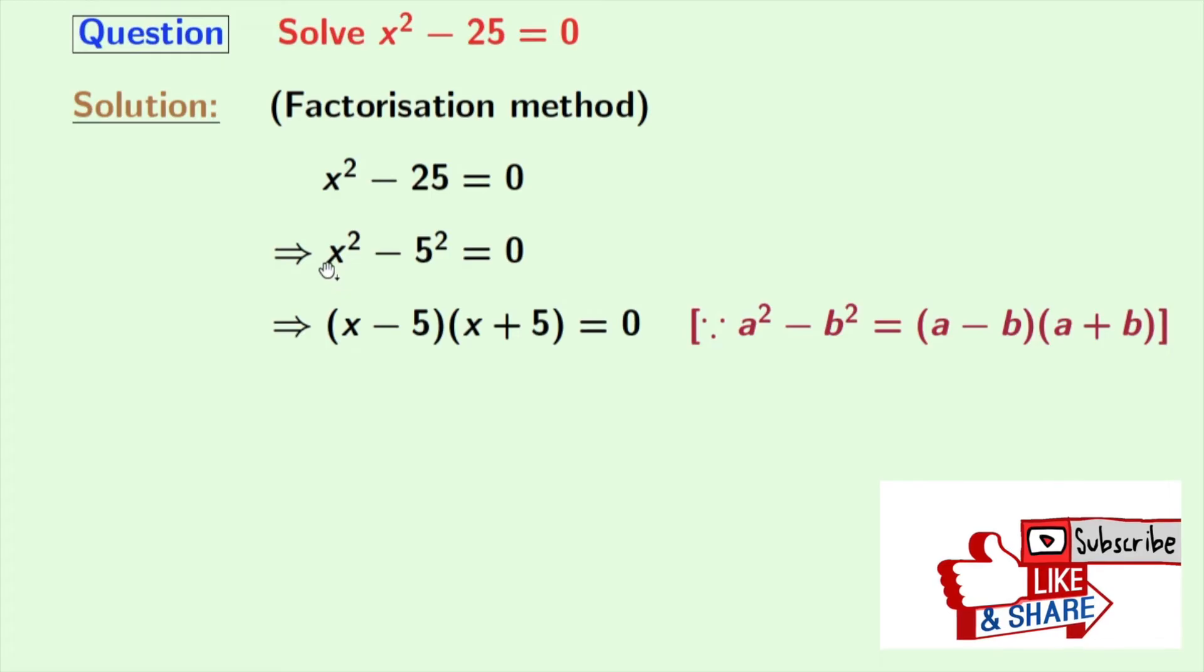Applying that, we get x square minus 5 square is equal to x minus 5 times x plus 5, which is equal to 0. Now we all know that if the product of two numbers is 0, then either of those numbers would be 0.